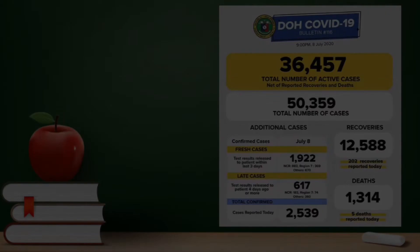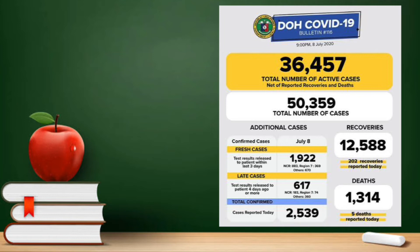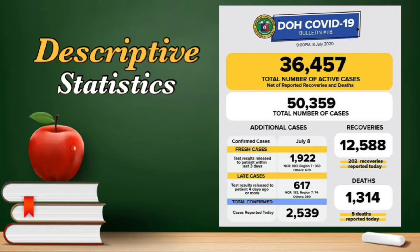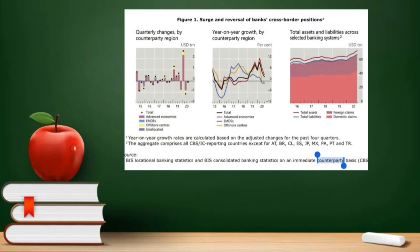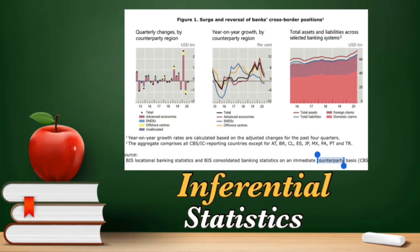This is an example of descriptive statistics because this update only describes the data that has been collected from the Department of Health. There is no inference on the possible effects from this report on the economy or existing policy. This next one is an example of inferential statistics because this update predicts an outcome on the expansion of global credit towards domestic borrowers.